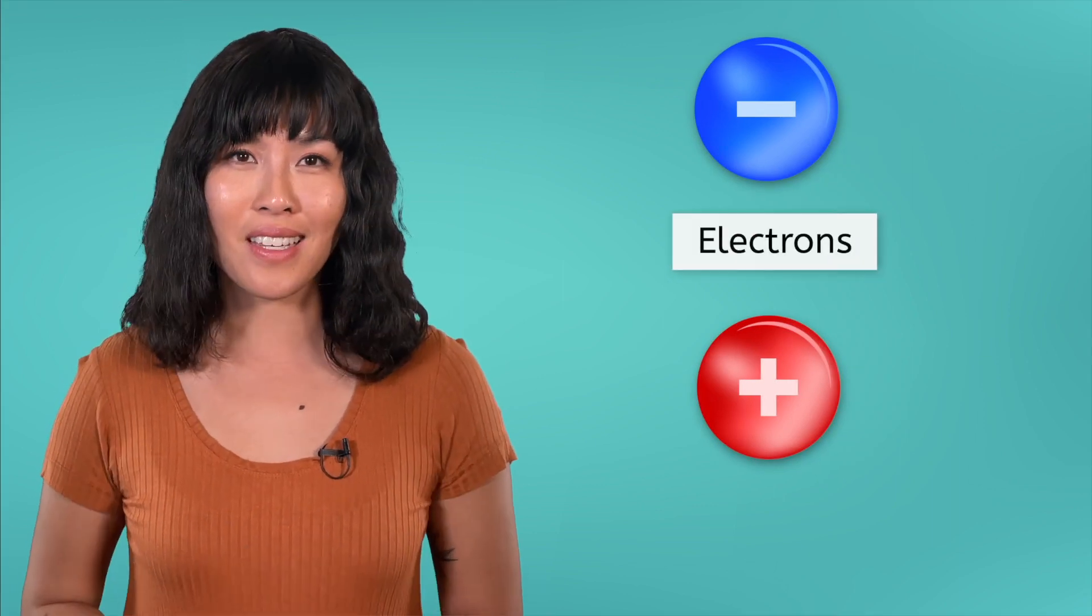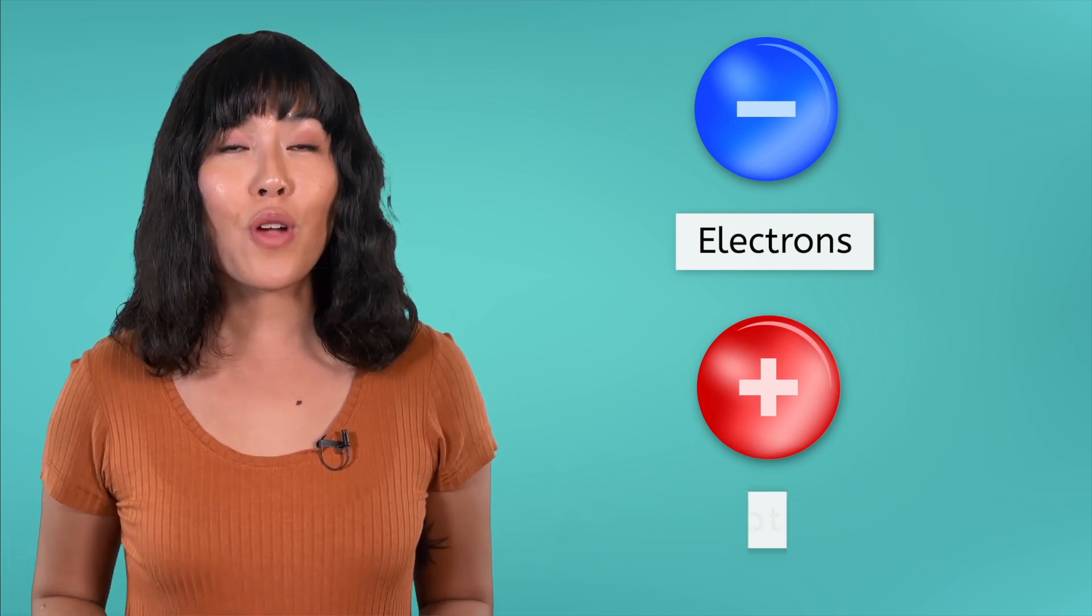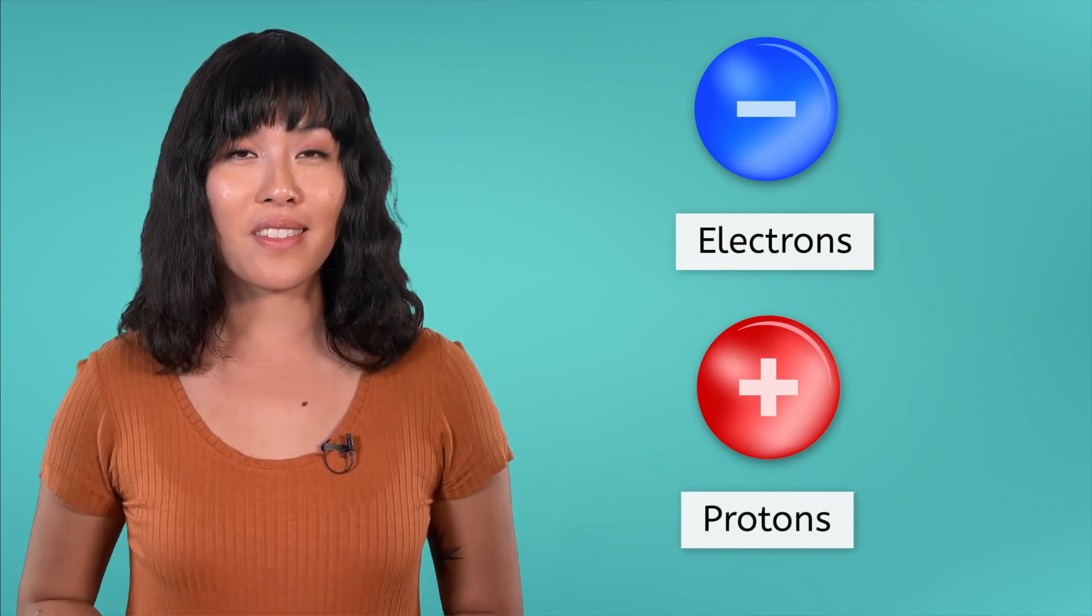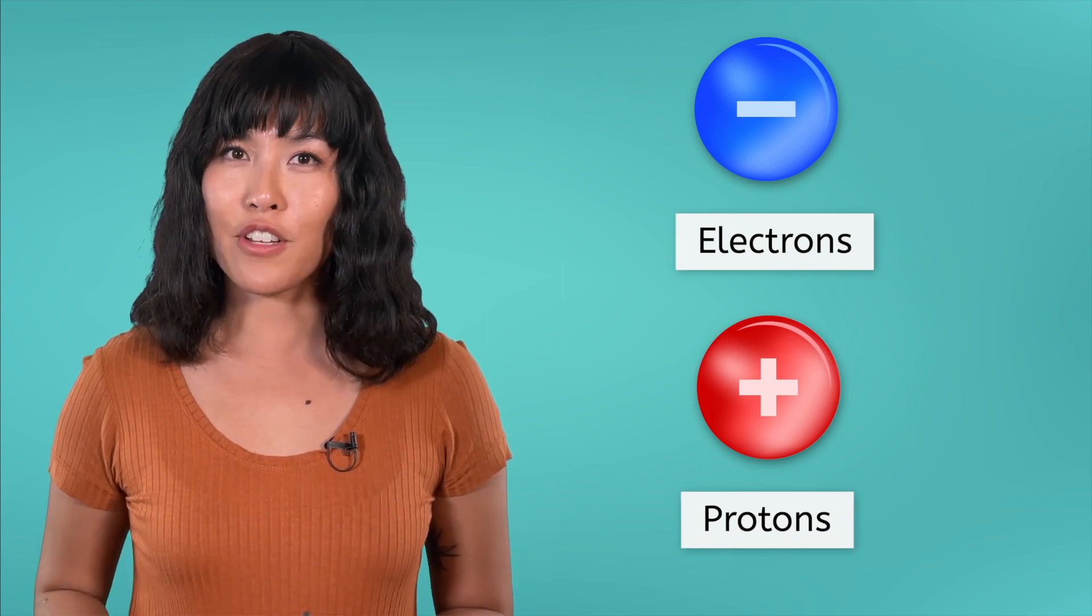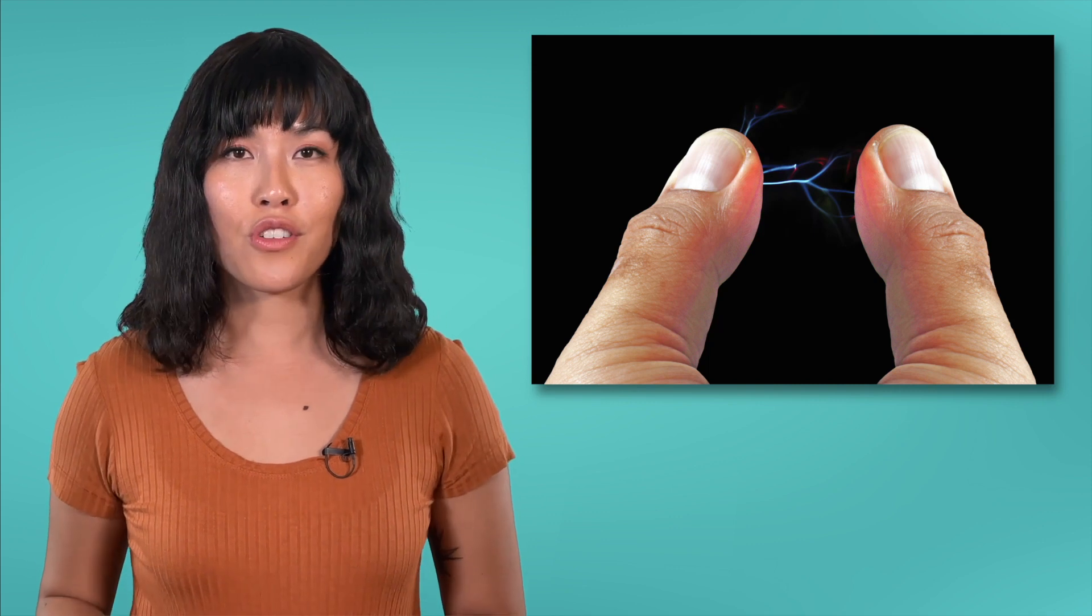As we went through the lesson today, we saw that electricity is fundamentally about charges, specifically the negative charges known as electrons. The charges will always repel other electrons, but attract positive charges known as protons. When there is a strong enough attraction between positive and negative charges, lightning can occur. On a much smaller scale, you may have experienced this transfer of charge when getting shocked by something.